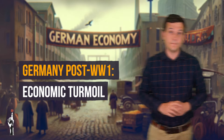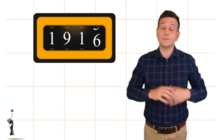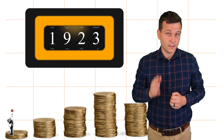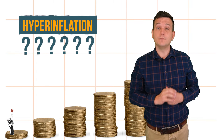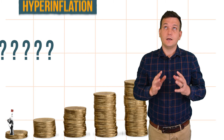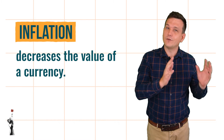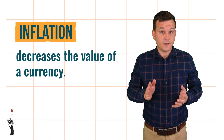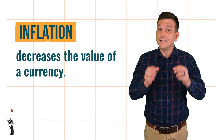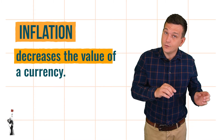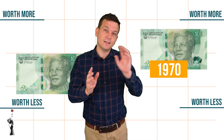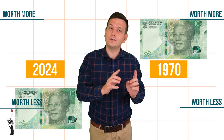Germany struggled economically after World War One. In 1923, Germany experienced hyperinflation. Inflation decreases the value of a currency — put differently, 10 rand in 1970 is worth very different to 10 rand today.